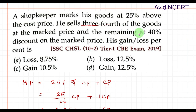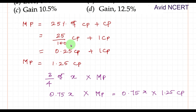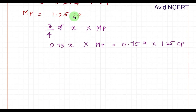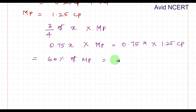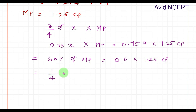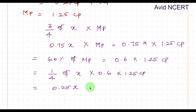The remaining goods are sold at 40% discount on the marked price, which equals 60% of the marked price. So 60/100 = 0.6 times MP = 0.6 times 1.25 CP. The remaining one-fourth (1/4) of the goods is sold for this amount, giving us 0.25x times 0.6 times 1.25 CP.